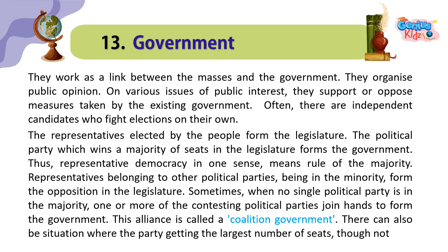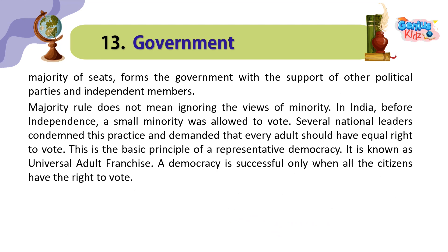There can also be a situation where the party getting the largest number of seats, though not a majority of seats, forms the government with the support of other political parties and independent members. Majority rule does not mean ignoring the views of the minority. In India, before independence, only a small minority was allowed to vote. Several national leaders condemned this practice and demanded that every adult should have an equal right to vote. This is the basic principle of a representative democracy, known as universal adult franchise. A democracy is successful only when all citizens have the right to vote.